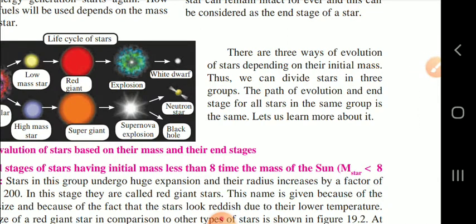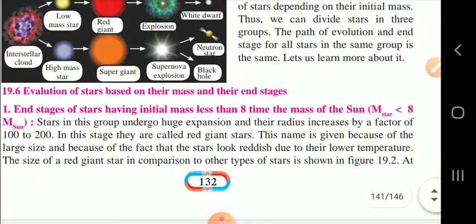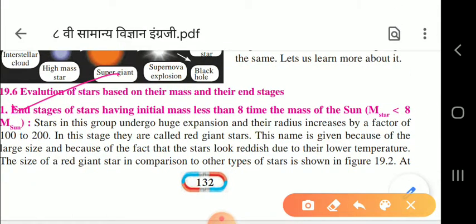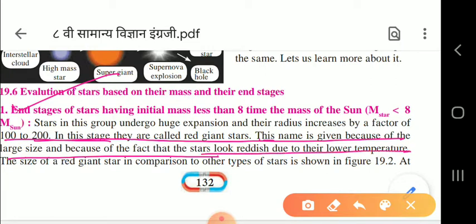There are three ways of the evolution of a star depending on their initial mass. We can divide stars into three groups; the path of evolution and the end stage within the same group is the same. For stars with initial mass less than 8 times the mass of the sun, these stars undergo huge expansion and their radius increases by a factor of 100 to 200. In this stage they are called red giant stars - this name is given because of their large size and their red appearance due to lower temperature.